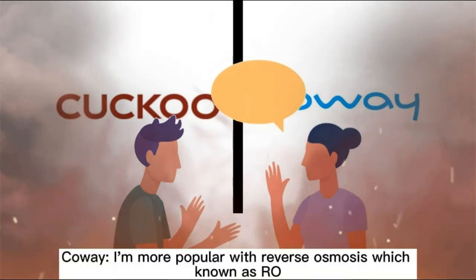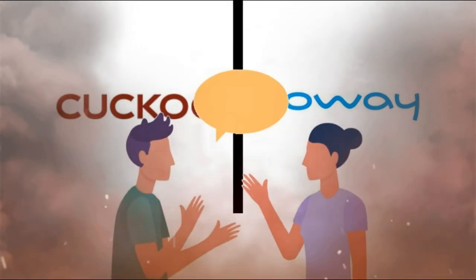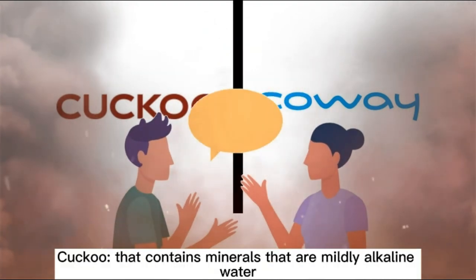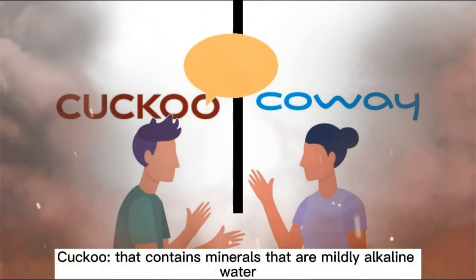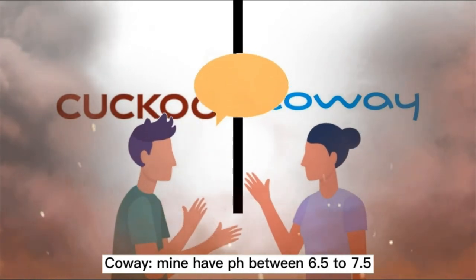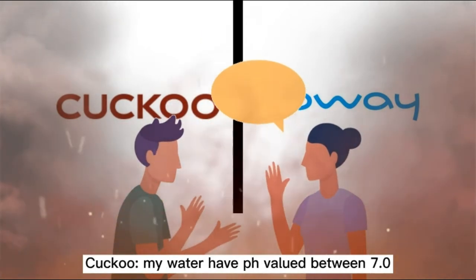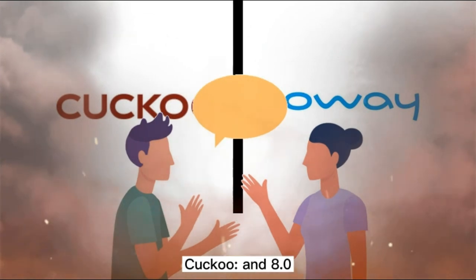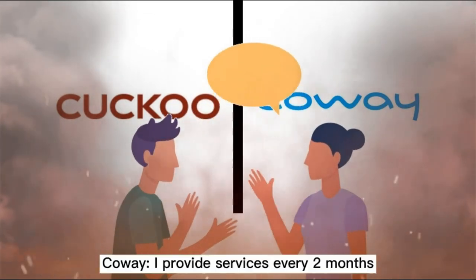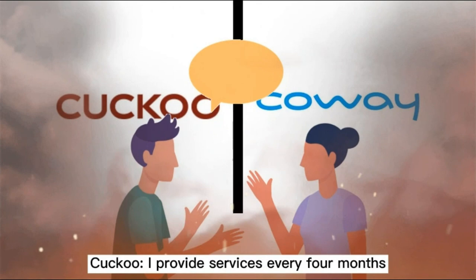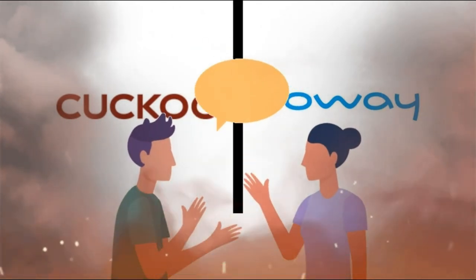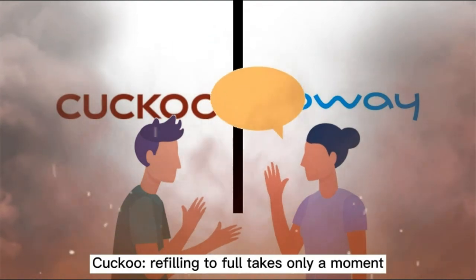In a competitor comparison, one competitor is more popular with Reverse Osmosis (RO) water and produces filtered water that contains minerals and is mildly alkaline, with a pH between 6.5 to 7.5. Kuku's water has a pH value between 7.0 and 8.0. The competitor provides services every two months while Kuku provides services every four months. The competitor's refilling process takes quite a while, whereas Kuku's refilling takes only a moment.